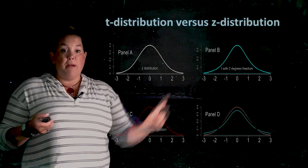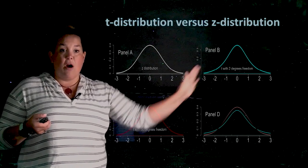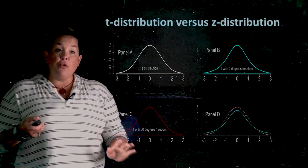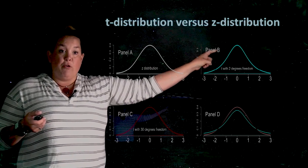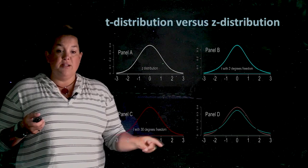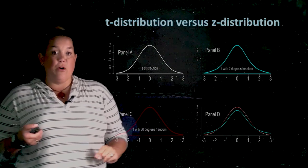Now, these other panels, panel B and panel C, are t-distributions, and you will notice the same thing. They are symmetric, they are unimodal, and centered at zero.